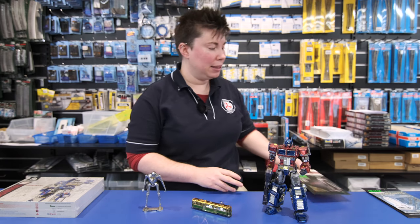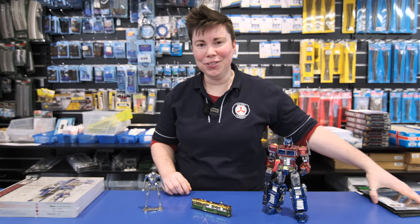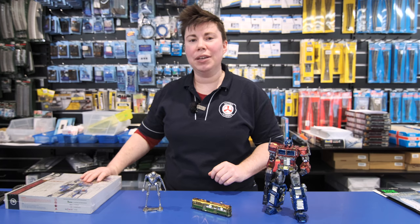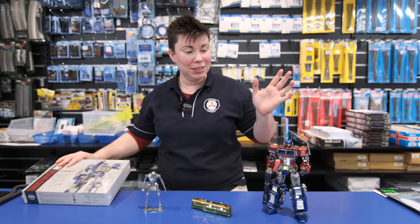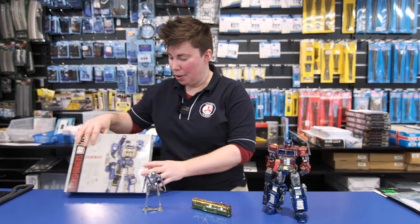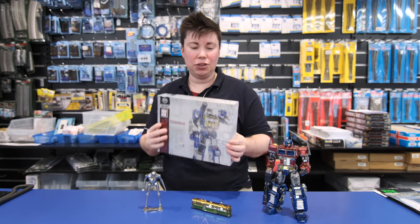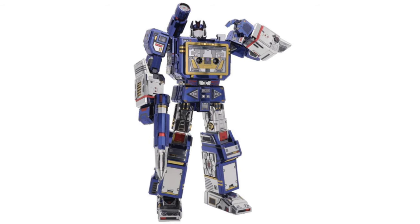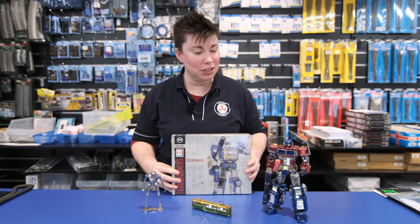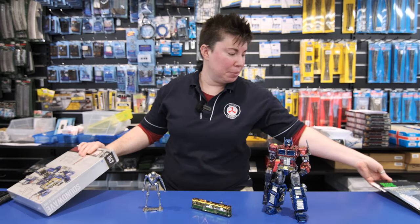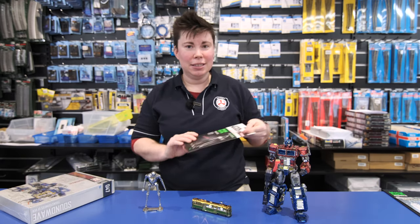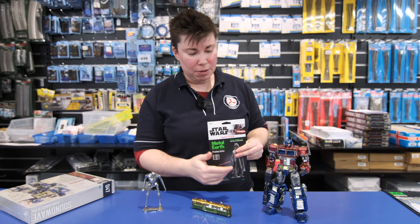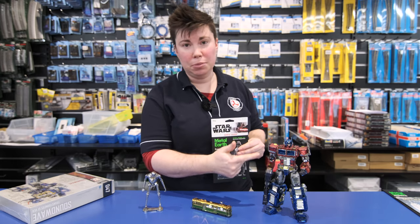Now the ultimate level, once you've done a few of these, is the Mu models. The Mu models include many transformers. This is one here. This is the size of the box to give you an illustration - significantly bigger compared to the other ones. One of these is like building ten of these. The amount of metal in just Optimus Prime's arm equals one whole basic model.